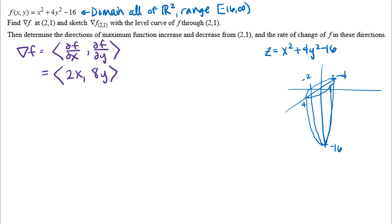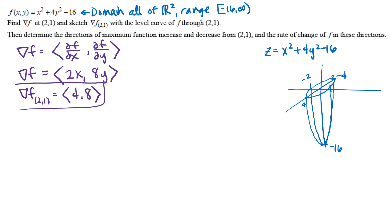To evaluate the gradient vector at the point (2, 1), I'll just plug that point in. The problem then asks us to sketch the gradient vector evaluated at (2, 1) along with the level curve of the function that passes through the point (2, 1).